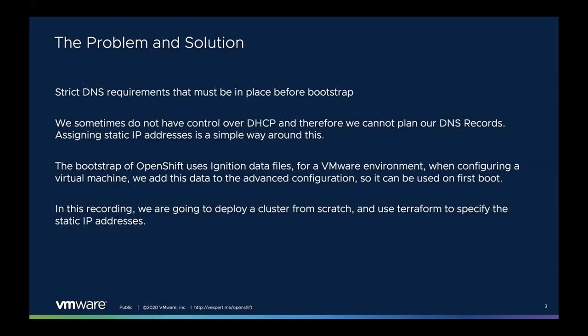To deploy OpenShift into a vSphere environment, we use ignition data files for the first boot of the operating system, and we add this data to the advanced configuration of the virtual machine. In this live session, we're going to deploy the cluster from scratch and we're going to use Terraform to help us specify the static IP addresses on boot as well.